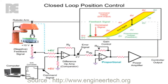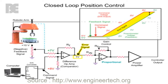The robotic arm moves to the desired position until the error signal at the difference op amp is zero. When the arm reaches the desired position, the difference op amp voltage is reduced to zero and the feedback voltage from the potentiometer equals the command voltage of the computer.